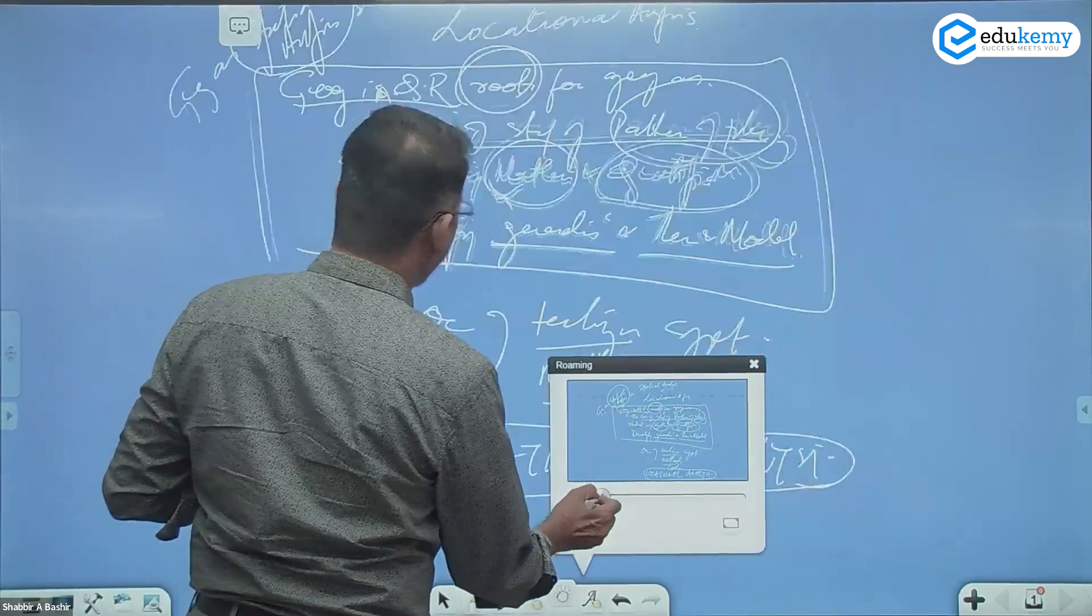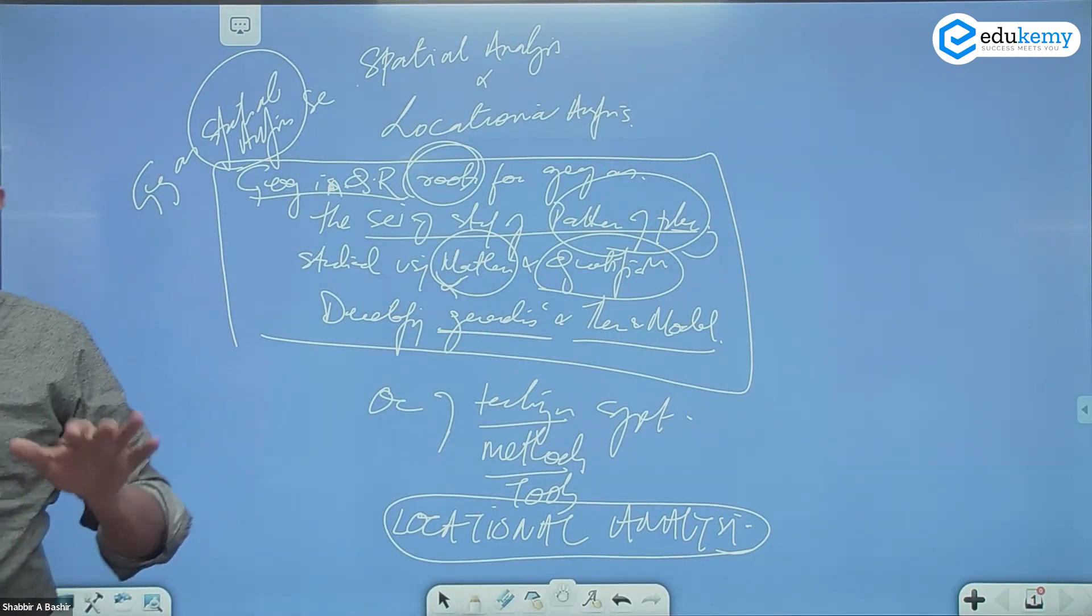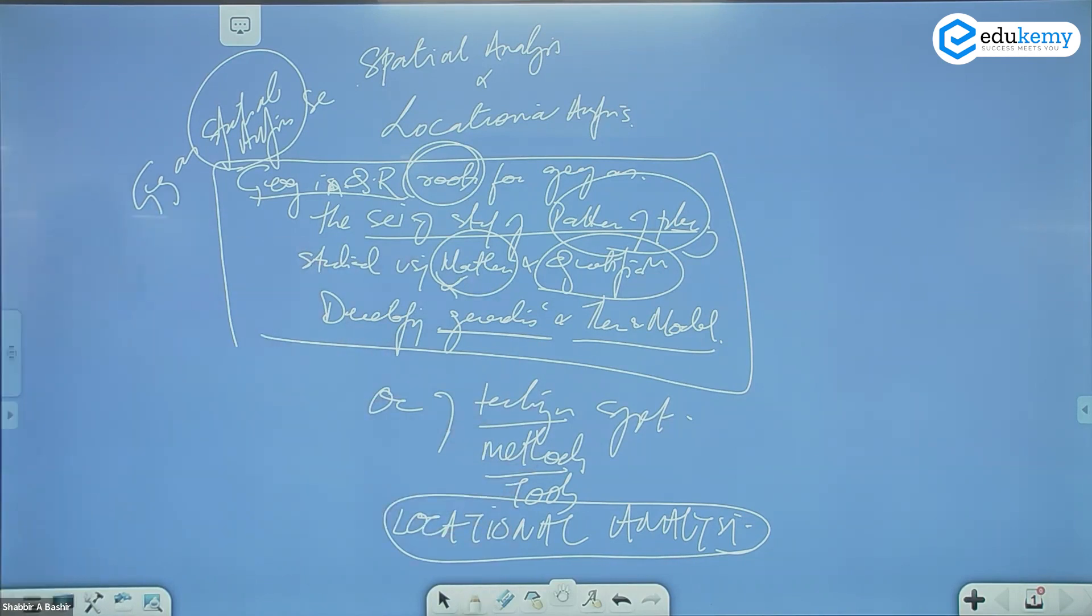When I say geography as spatial science, geography is the science of studying patterns on the surface, the distribution of phenomena on the surface. And we need some tools and methods.